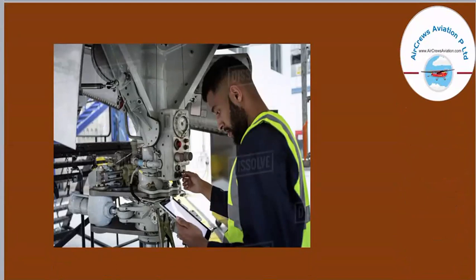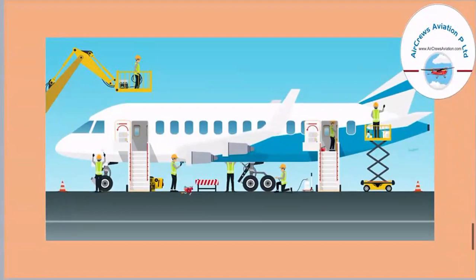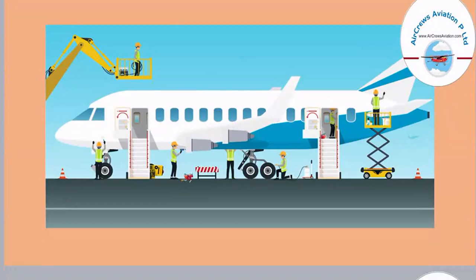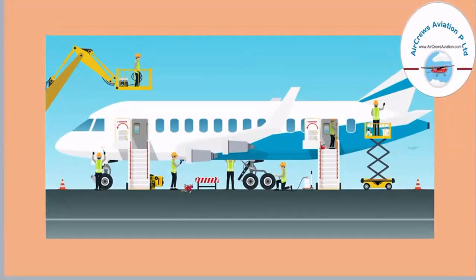Maintenance manuals contain each and every detail about how maintenance work is to be done and which rules and guidelines must be followed. AME is all about the maintenance, repair, and overhaul of an aircraft. Various parts are inspected by aircraft maintenance engineers — some checking the landing gear, some in the cockpit, and some examining the engines — after every landing.